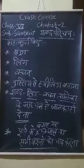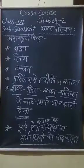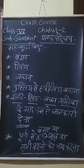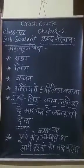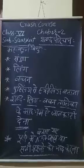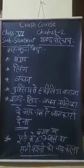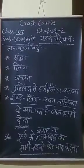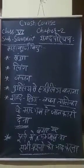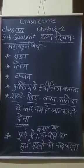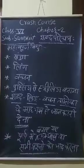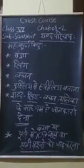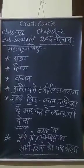तो चलते हैं — संज्ञा: किसी भी व्यक्ति, वस्तु या स्थान के नाम को संज्ञा कहते हैं। जैसे — राम, सुख, विद्यालय, उद्यान।